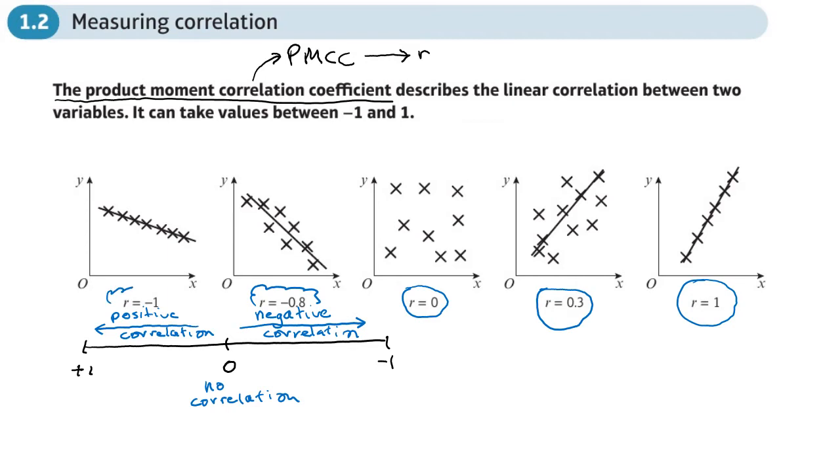And on this one here, you can see R equals negative one. So we get a perfect positive correlation.